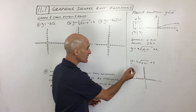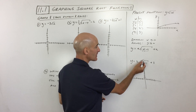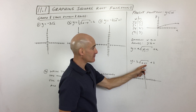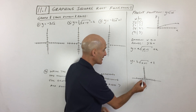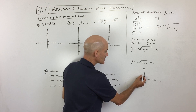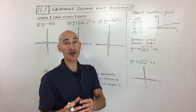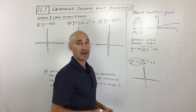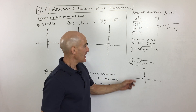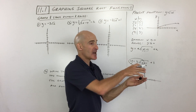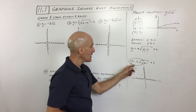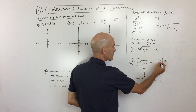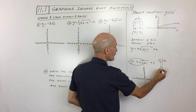Let's look at an example: graph y equals two times the square root of x plus one, plus three. This is shifting the graph left one — the opposite of positive one — and up three. So left one, up three is our new starting point, our new origin where everything originates from. Then we zero in on what's left over, the parent function. The a value of two is going to stretch the graph more vertically.